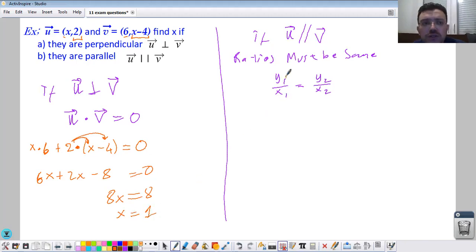For parallel, the ratios: y1 over x1 from the first vector, 2 over x, should be equal to from the second vector, x minus 4 over 6.